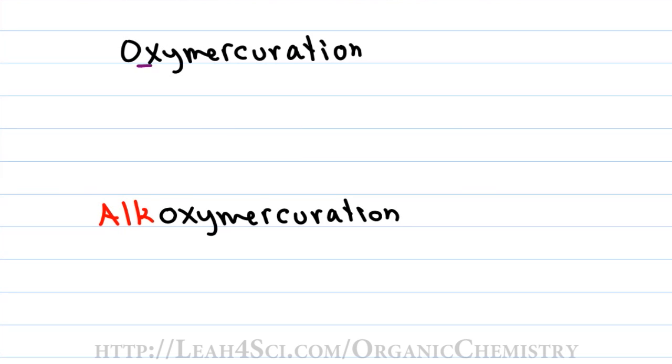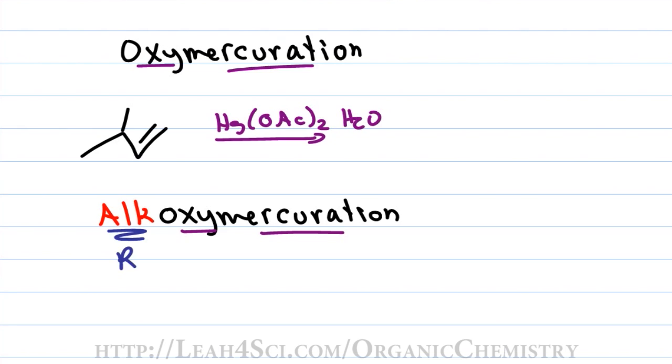Notice both reactions have oxy and mercuration and that is because we add an oxygen atom through a mercury reaction intermediate. The only difference is the alk-oxy has an alkyl group which is an R group. For oxymercuration, if I react the starting alkene with HgOAC2 in water as step 1 followed by the reducing agent sodium borohydride in step 2,